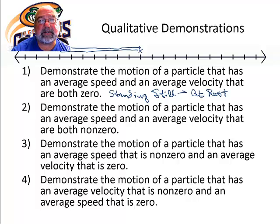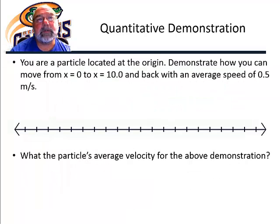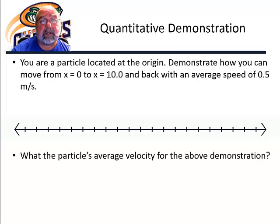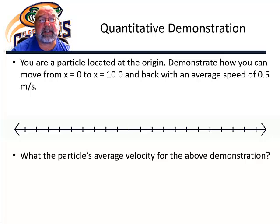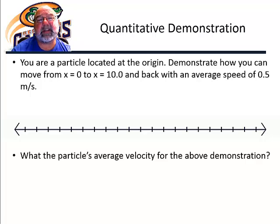Now we're going to do a quantitative example, meaning we're going to work with numbers. We have a particle located at the origin, and we're going to demonstrate how you can move from a position of zero to a position of ten and back, with an average speed of 0.5 meters per second. I'm going to assume my positions are given in meters.